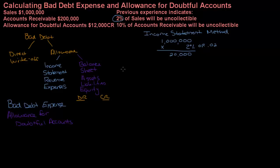Now we have to ask ourselves: what did I just calculate? I've got twenty thousand, but I don't know twenty thousand what exactly. Well, if I'm using the income statement method, I'm using an amount from my income statement — we used revenue to calculate another amount that goes on my income statement. So which of these two accounts goes on the income statement? Bad debt expense.